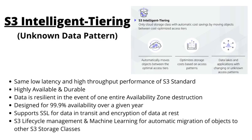The next storage class is S3 Intelligent Tiering. This uses machine learning to automatically transfer your data between different S3 classes according to your data retrieval patterns. It is used for data lakes and applications with changing or unknown access patterns. It is highly available and durable with low latency and high throughput performance, the same as S3 Standard.